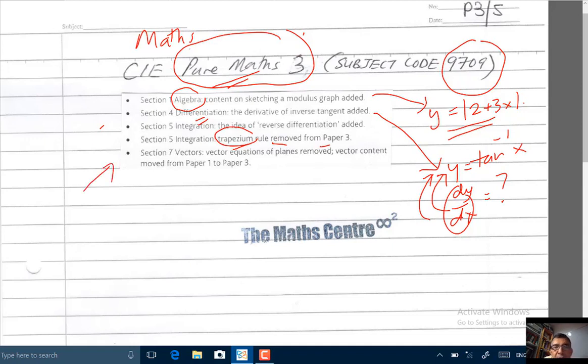Next, under the topic vectors, vector equations of planes have been removed. Now note, the vector content has been moved from paper 1 to paper 3. So what you studied previously for vectors under paper 1 has now all been moved to paper 3.